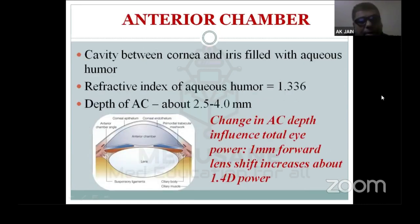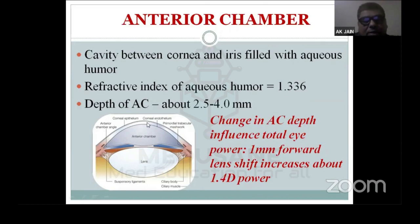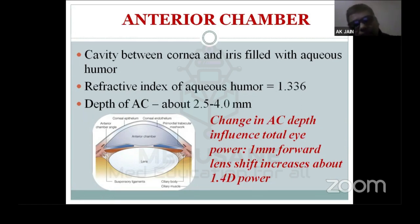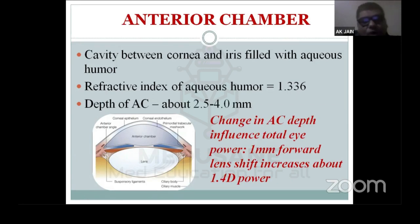The next component is the anterior chamber — a cavity between the cornea and the iris, filled with aqueous humor. The refractive index of the aqueous humor is 1.336, which is lower than the refractive index of cornea (1.376). These values are frequently tested in MCQs in MBBS and postgraduate exams, so we must remember: corneal RI = 1.376, aqueous RI = 1.336.